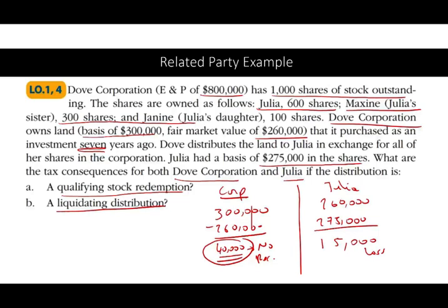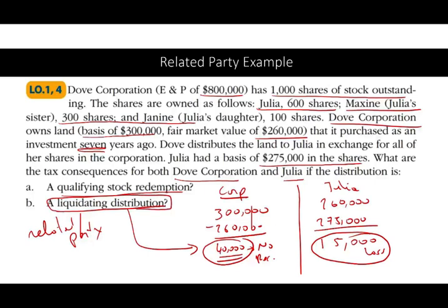Now let's change it to a liquidating distribution. The $40,000 loss for the corporation is still not allowed — it's a related party loss. What about Julia? Julia still has $15,000 of loss. Here, Julia will be able to take the loss. Why? Because it's a complete liquidation, and the property was purchased by the corporation seven years ago — that's over five years. Therefore the land is not disqualifying property (it wasn't contributed via Section 351 within the five-year window), and the loss is allowed.